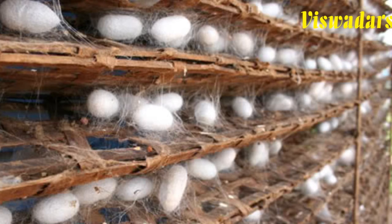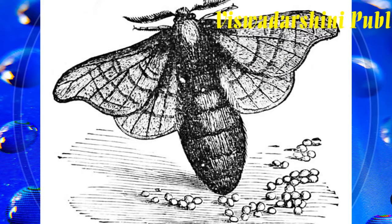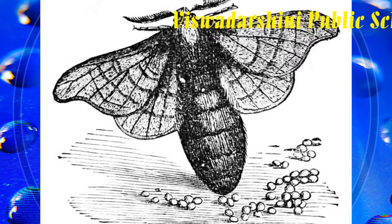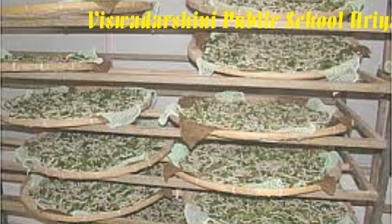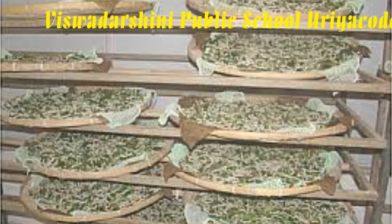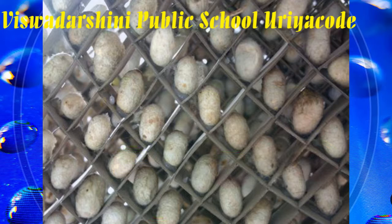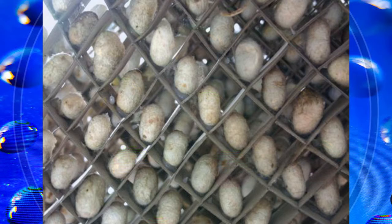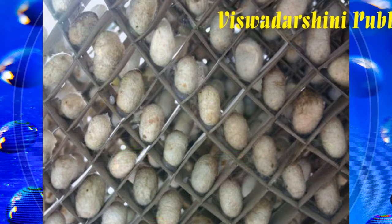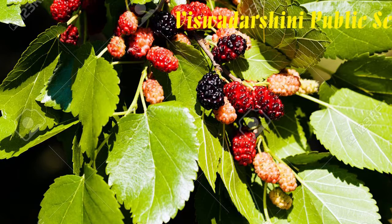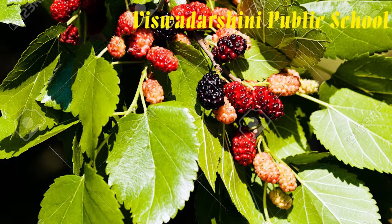For obtaining silk, moths are reared and their cocoons are collected into silk threads. First, rearing silkworms: the female silk moth lays hundreds of eggs at a time. The eggs are stored carefully on strips of cloth or paper and sold to silk worm farmers. The farmers keep eggs under hygienic conditions and suitable conditions of temperature and humidity.